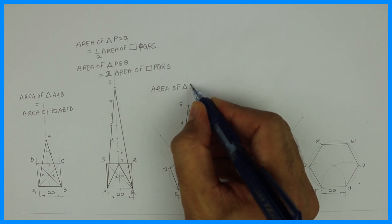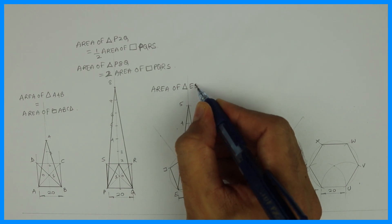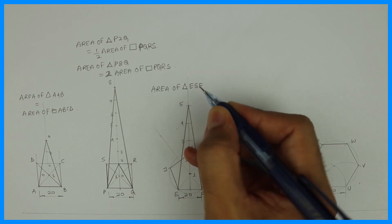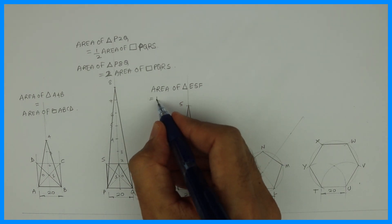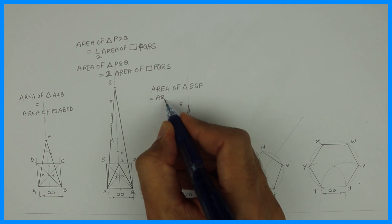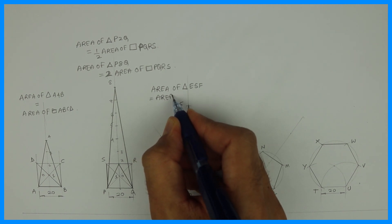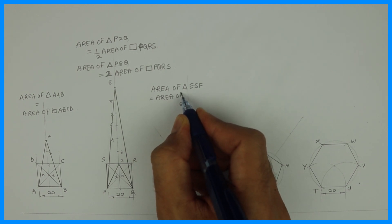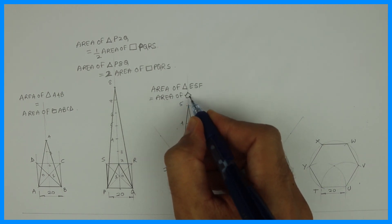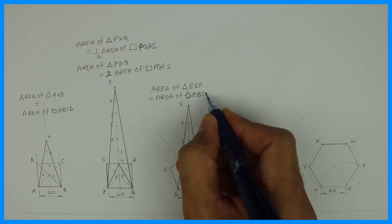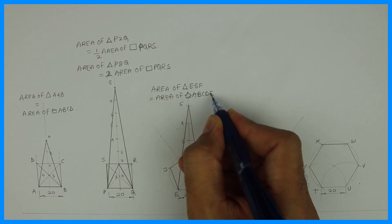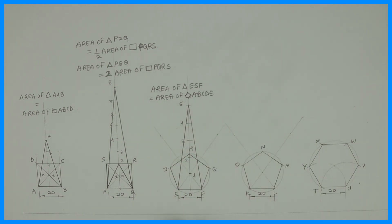So area of triangle E5F is equal to area of pentagon ABCDE.